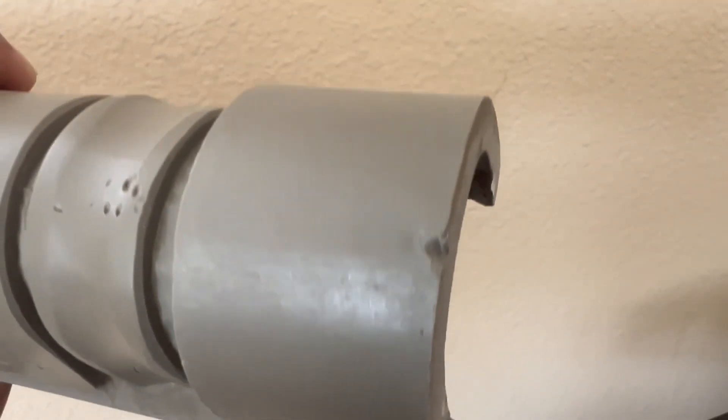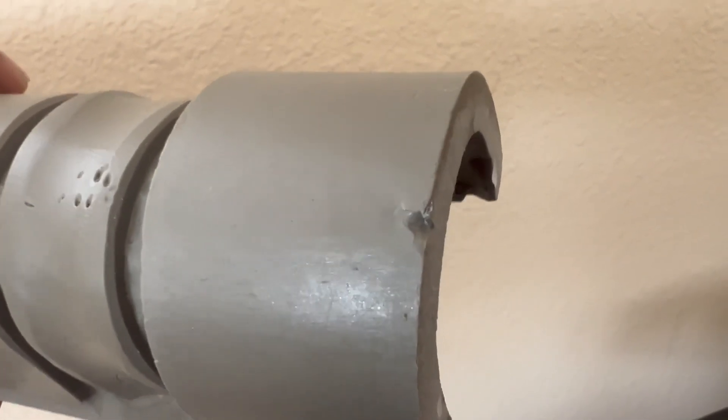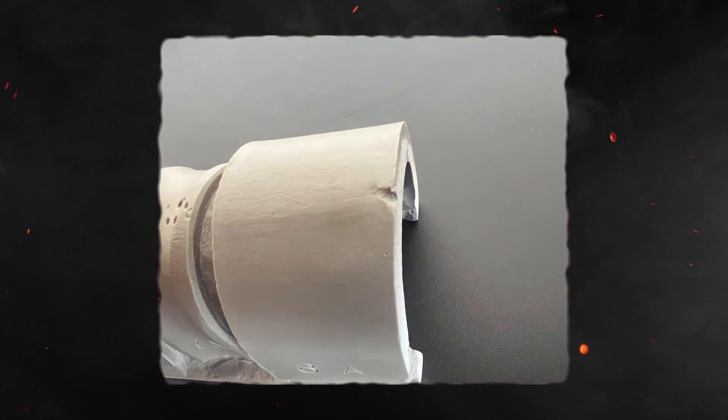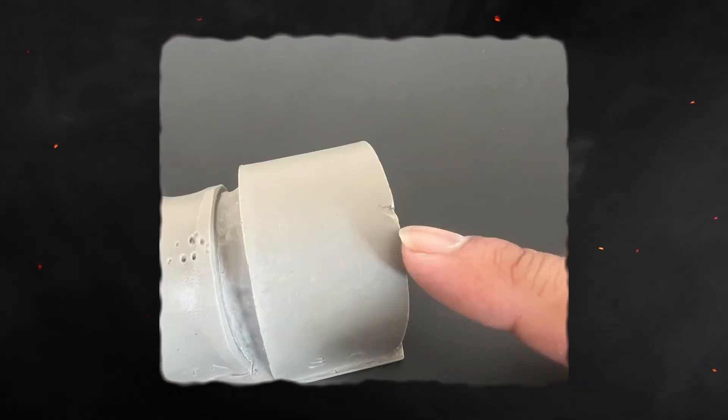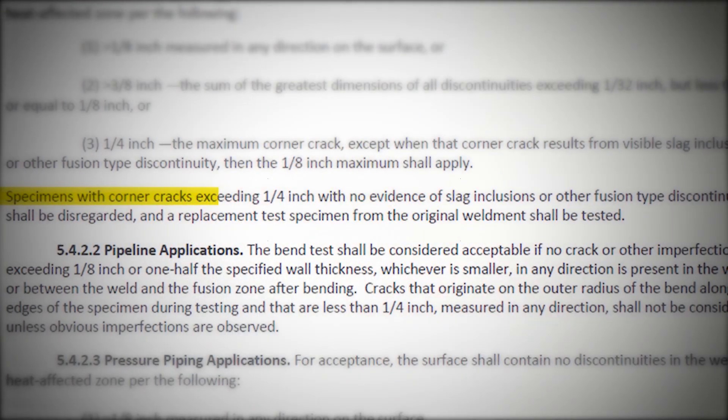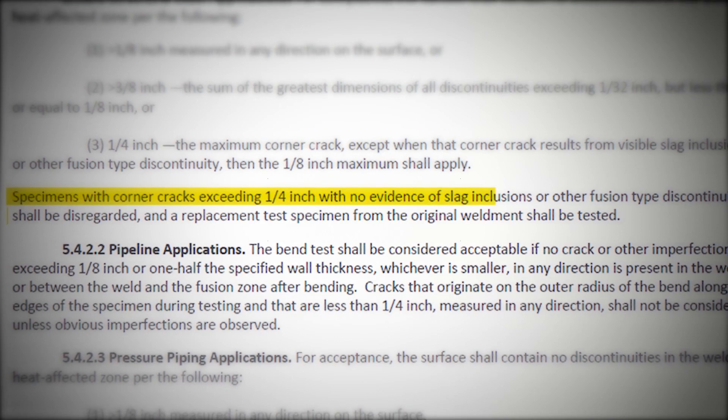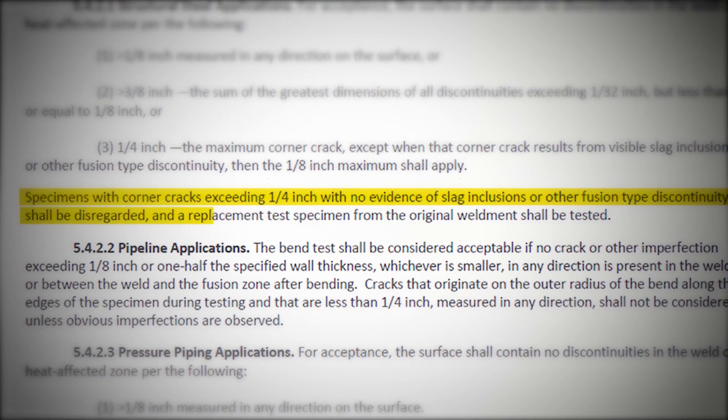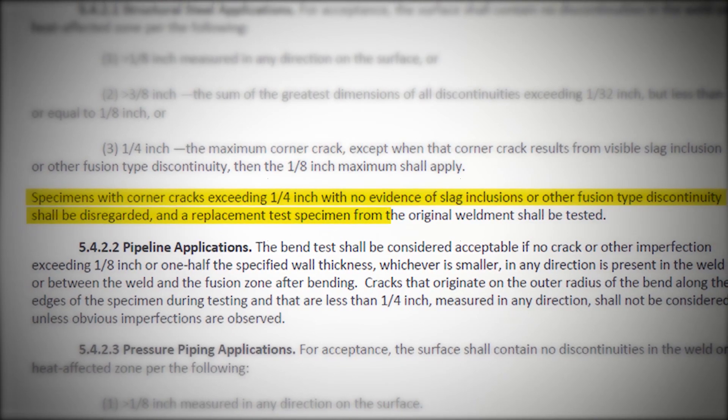If the question states that there is no visible slag inclusion or other fusion discontinuities, and if the crack is less than a quarter of an inch, it's acceptable. But per that last paragraph on rule number three, if the corner crack exceeds a quarter of an inch, the specimen should be disregarded and a replacement test specimen from the original weldment shall be tested.